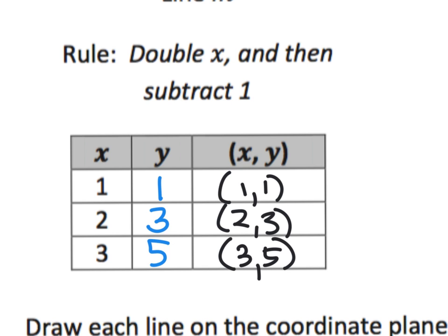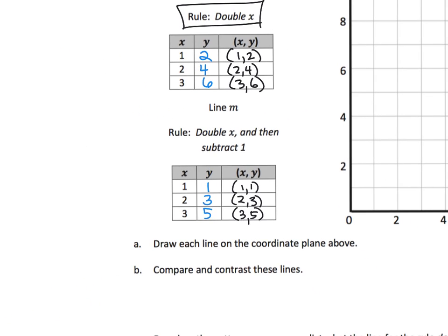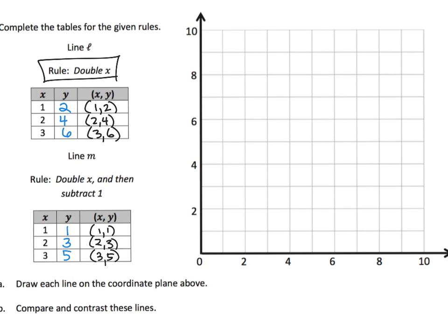Now we're going to graph these on the same coordinate plane. We'll do the first line in blue. We've got (1,2) — that goes here; (2,4) — that goes here; and (3,6) — that goes right there. Our line looks like this, and you'll notice it's going through the origin and heading upward.